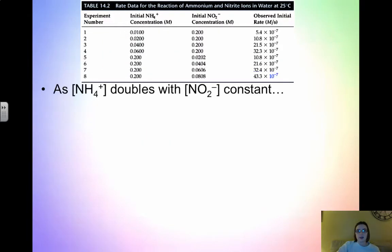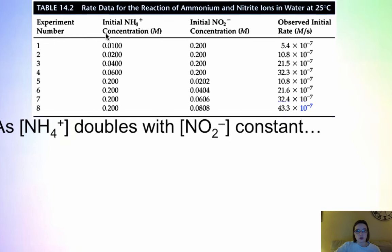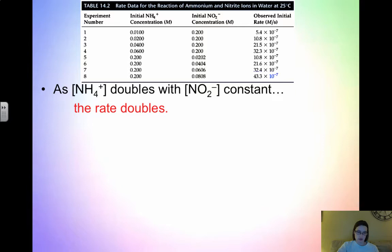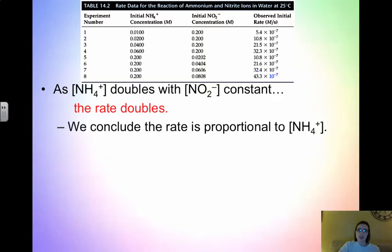We simply look from one trial to another when one of the reactants changes. Looking between experiments 1 and 2 — you can pick any pair — NH4+ is what is changing. Going from 1 to 2, the concentration doubles while NO2- stays the same, which ensures only one variable is changing. Notice the rate also doubles. As the concentration of NH4+ doubles, the rate doubles, meaning the rate is directly proportional to the NH4+ concentration. Looking from 1 to 3, the concentration quadruples and the rate quadruples.